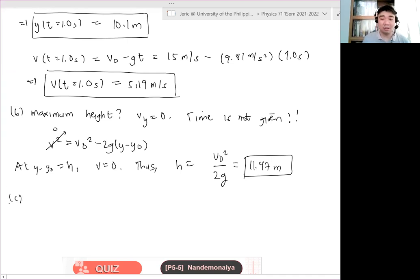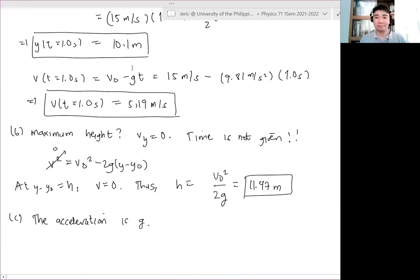And then letter C. What is the acceleration dun sa maximum height? It should be the same. This is a conceptual question. Marami nagkakamali diyan. Hindi porkat zero ang velocity ay zero ng acceleration. It can still be finite, some quantity, some non-zero quantity. And exactly at any given point in the trajectory of the Pokeball, the acceleration is the same which is G which is 9.81 meters per second squared downward. So the acceleration here is G. Okay. Questions? Questions? And so far.